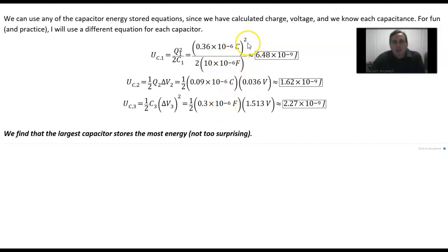When we calculate these out, we get our values: 6.48 times 10 to the minus 9 joules, 1.62 times 10 to the minus 9 joules, and 2.27 times 10 to the minus 9 joules.